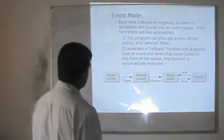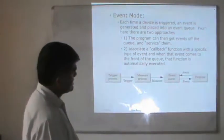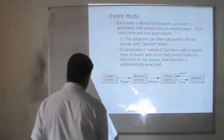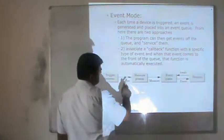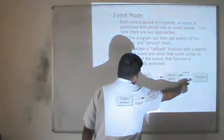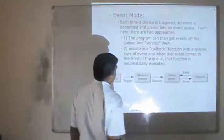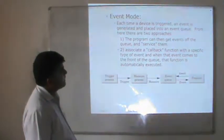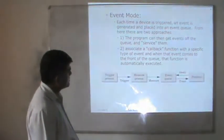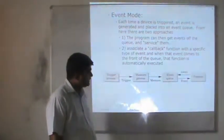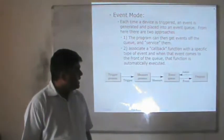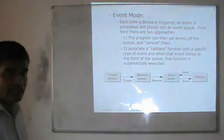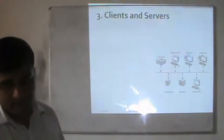In event mode, each time a device is triggered, an event is generated and placed into an event queue. The trigger and measure processes generate events; the program returns and awaits queue results. The program can get events from the queue and service them by associating a callback function with a specific type of event. When that event comes to the front of the queue, that function is automatically executed, as shown in the diagram.